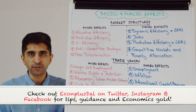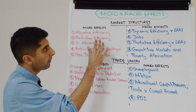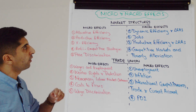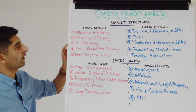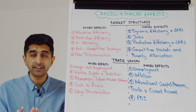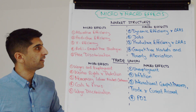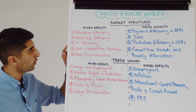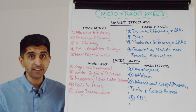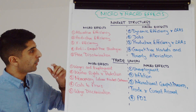If it comes in paper 3 it's going to be linked to a certain market structure, but these micro and macro effects are very good generally and apply to all of them. Let's focus on the micro effects first. Numbers one, two and three are your static efficiencies. In concentrated markets like monopoly we tend not to see these, whereas in competitive markets we do.